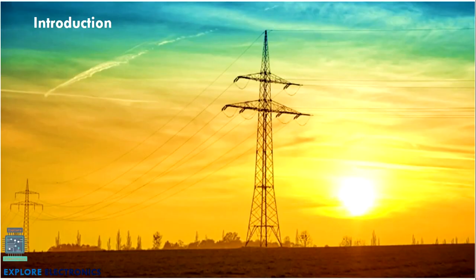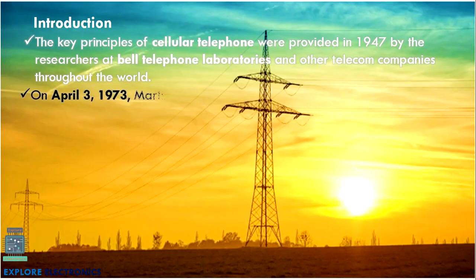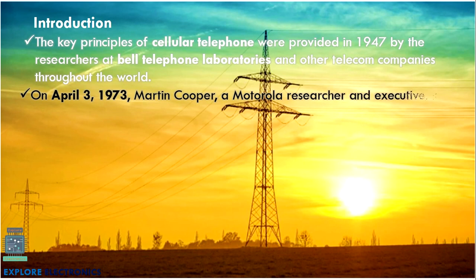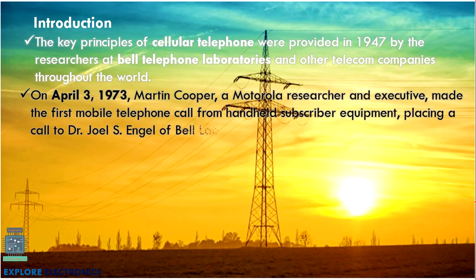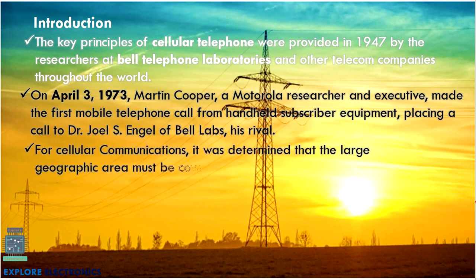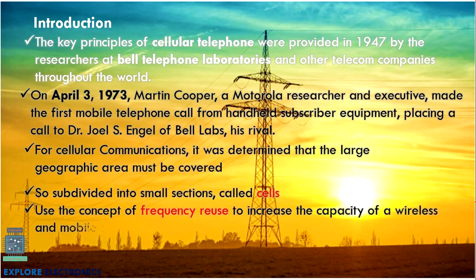Let us look into the history of the cellular telephone system. The key principle of the cellular telephone was provided in 1947 by researchers of Bell Telephone Laboratory as well as some other telephone companies. The first telephone conversation was in 1973 by a Motorola researcher. Cellular telephone companies aimed to cover large geographical areas, which was the challenge at that time, so they divided the large geographic area into cells.